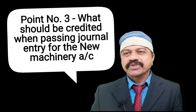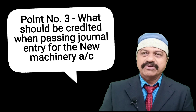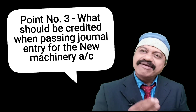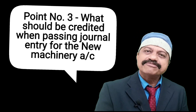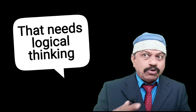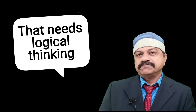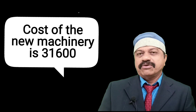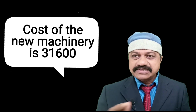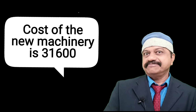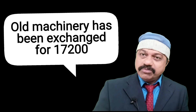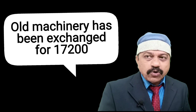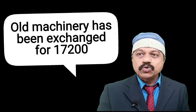Then point number three: what should be credited when passing the journal entry for the new machinery account? That needs logical thinking. The cost of the new machinery is 31,600.